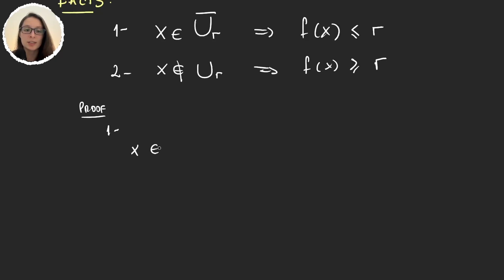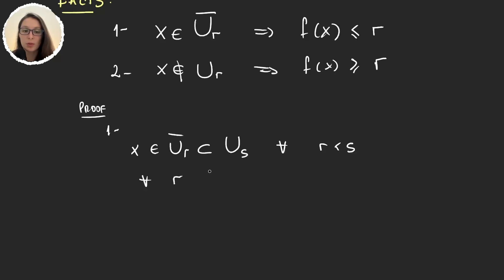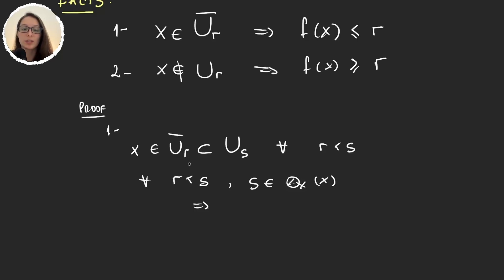If we take x in the closure of U_r, we know the way we built these sets was so that the closure of U_r is a subset of U_s for every s greater than r. So for any s greater than r, x is an element of U_s, and so for all of these indexes there will be elements in Q(x). Using the definition of infimum gives us that the infimum will be r or smaller, because x might have been in an even smaller subset. So f(x) is less than or equal to r.